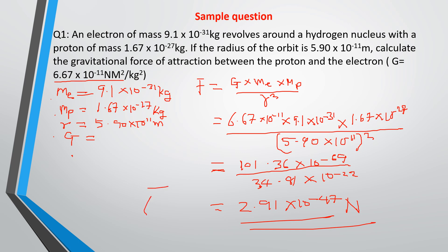Working this out, F equals 2.91 times 10 raised to the power minus 47 newtons. So the force of attraction between the proton and the electron is 2.91 times 10 to the power minus 47 N. What you should take note of is how you manipulate these indices. Remember your index laws in mathematics: when you have a multiplication sign you add the indices. Apply that to all these exponents — they are very important. Once you know what you are looking for, you know the equation to apply, and your answer comes readily.